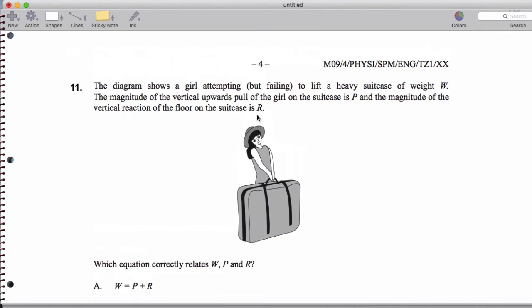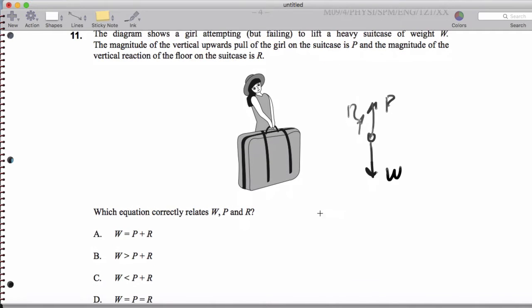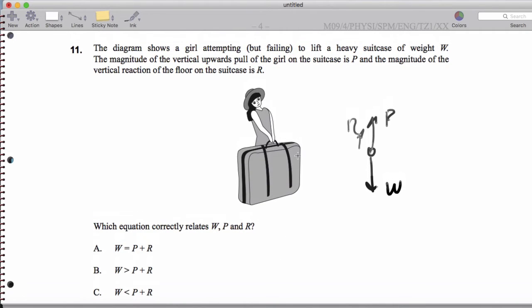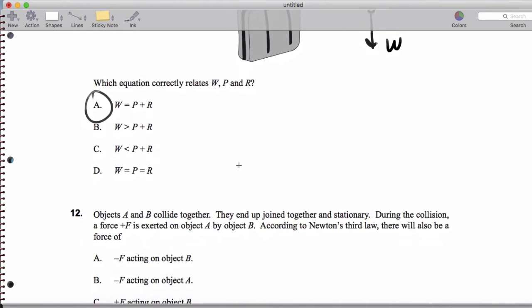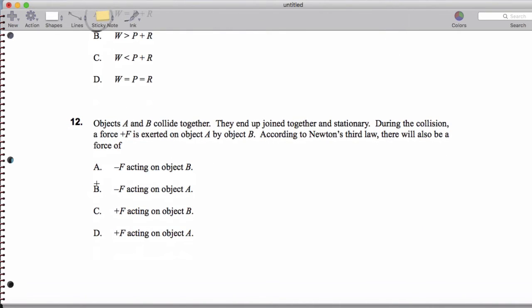And then here we have a girl trying to lift a heavy suitcase. The weight is W. We have this vertical pull P and this reaction force R. So she doesn't quite do it. She's not able to do it, which means the forces are actually balanced. So weight is going to equal P plus R. And then basically, this is a third law question. If we have a force plus F on A by B, then we're going to have a negative F on B because of A.